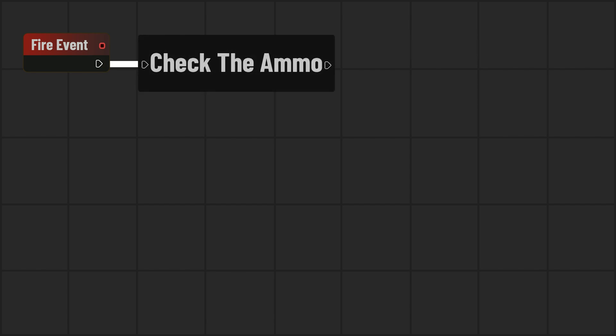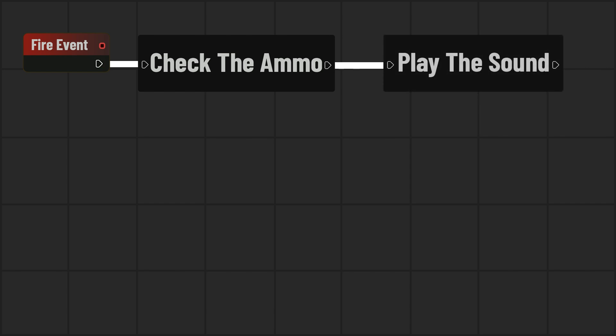Let's start by understanding how the fire event works. First, we have our fire event. When we trigger this function, we first check if we have enough ammo. And if we only have one bullet, we play a different animation on our weapon, so the slider gets stuck when the weapon gets empty. Then we play a sound at our weapon's location — if we have enough ammo, we play the fire sound; if not, we play the empty sound.